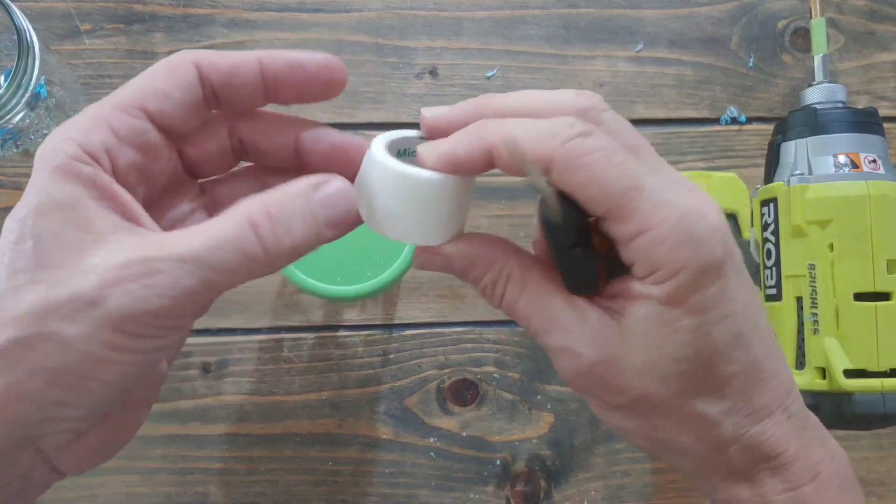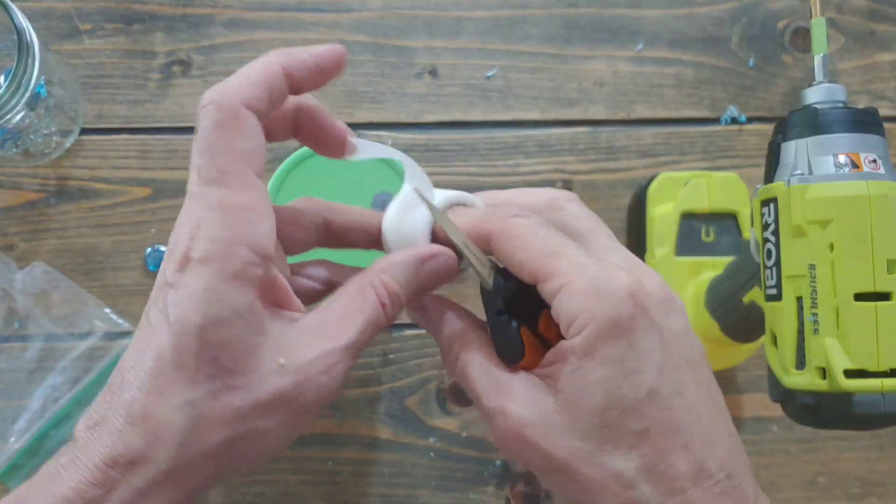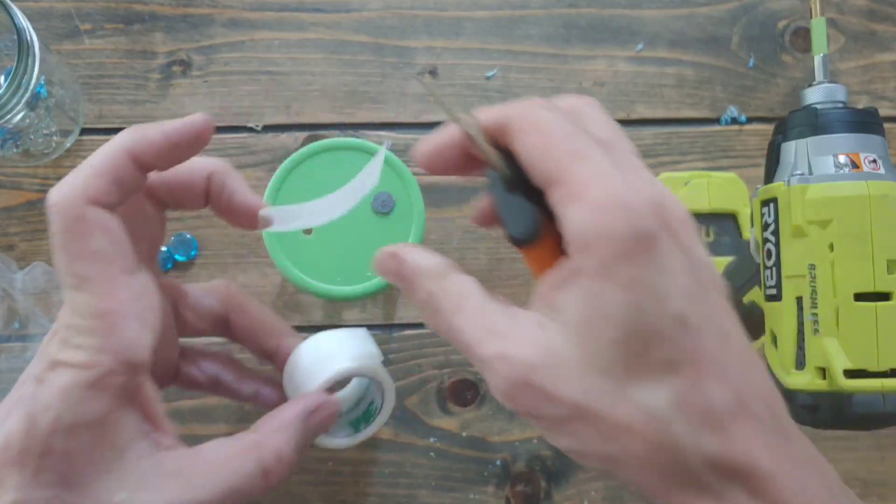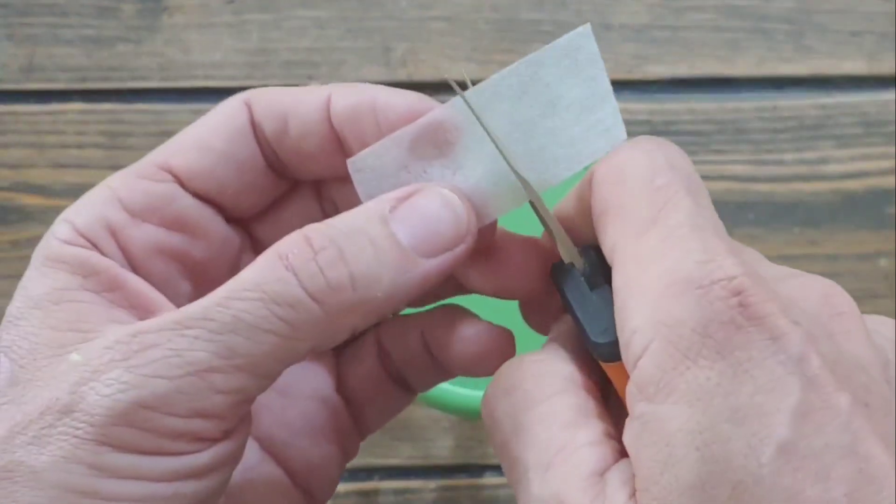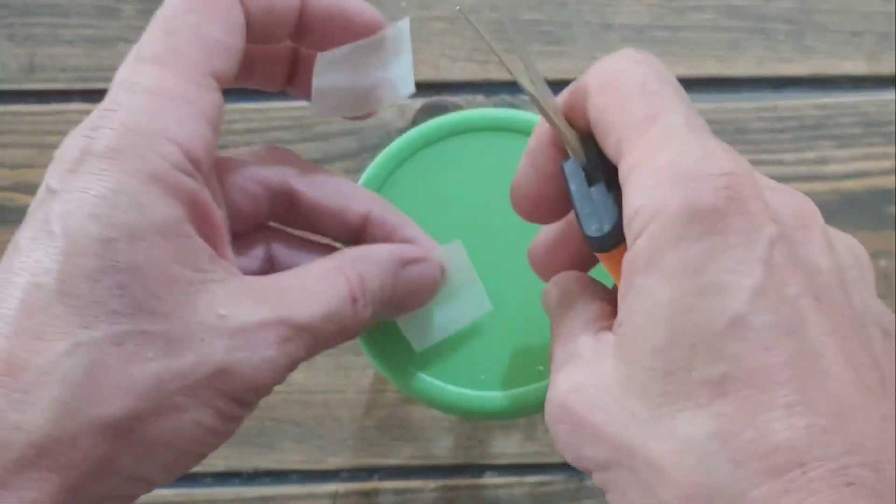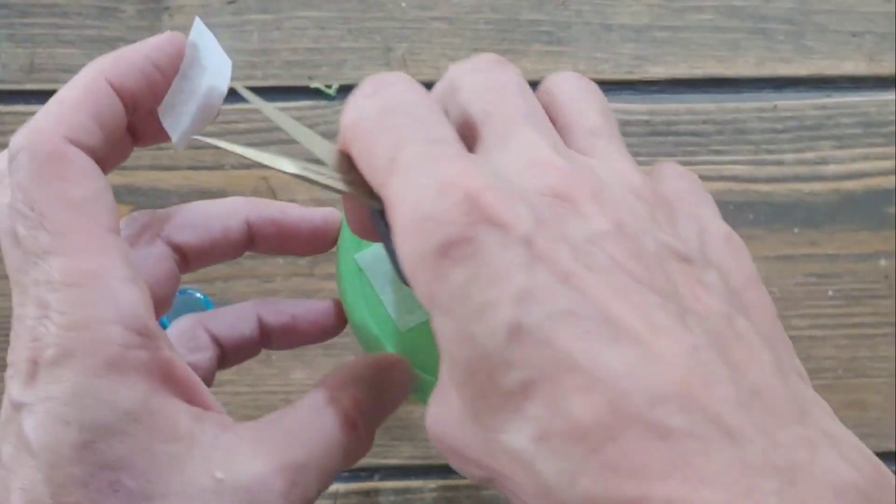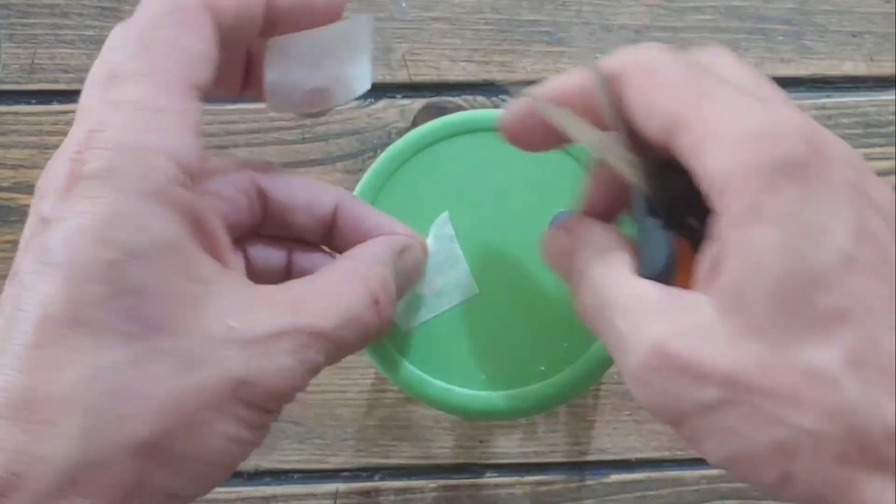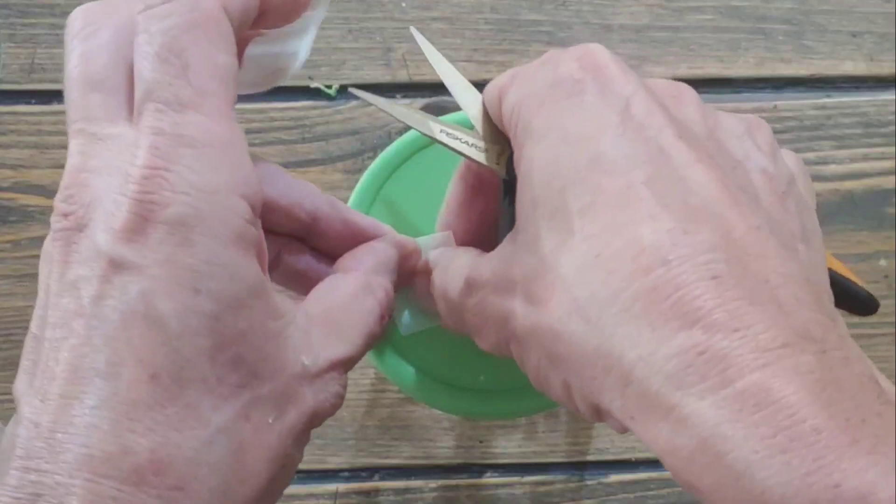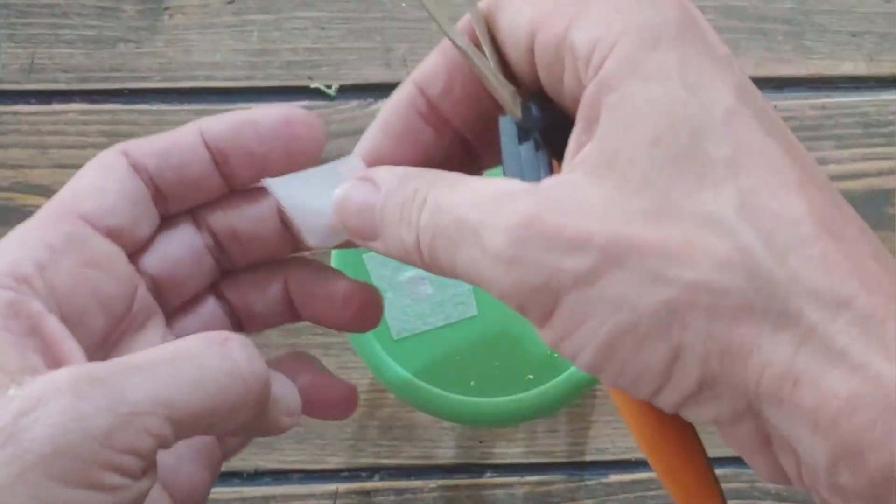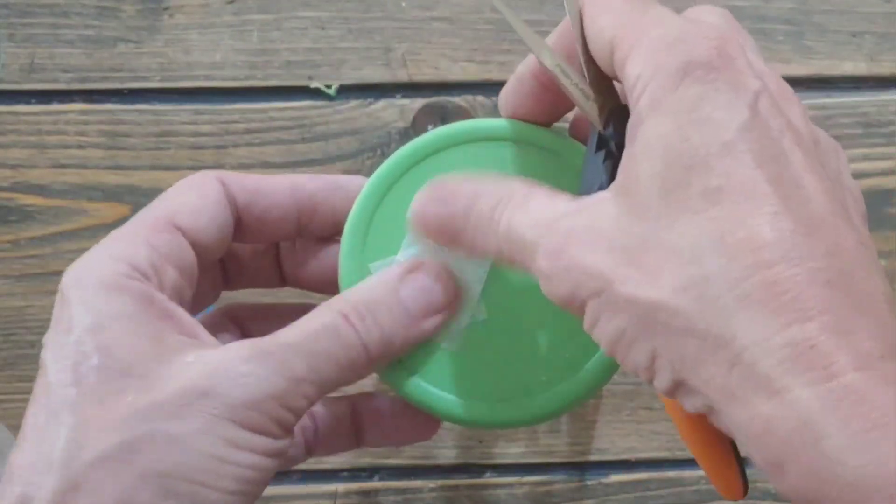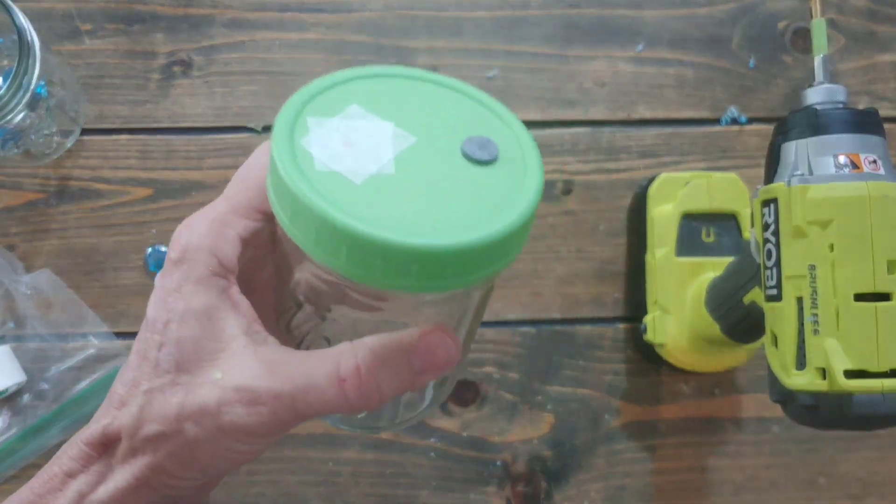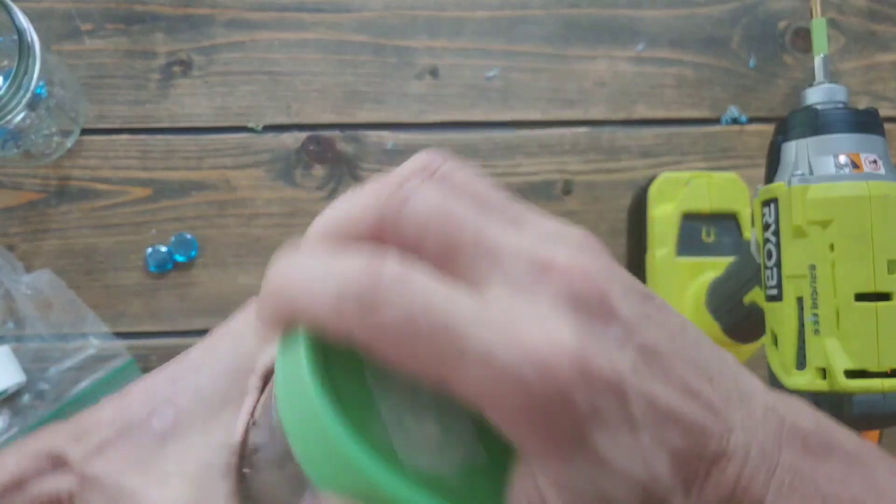And then get some handy-dandy micropore tape, which we know and love, and put a double layer. Get it more centered. Double layer of micropore tape over the hole if you don't want to spend the money.